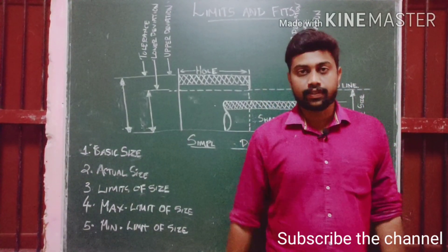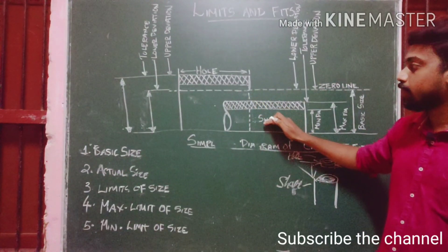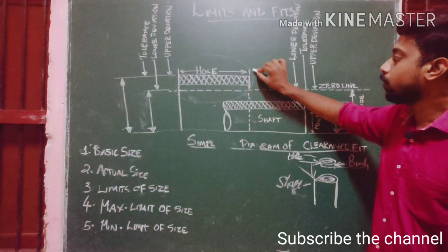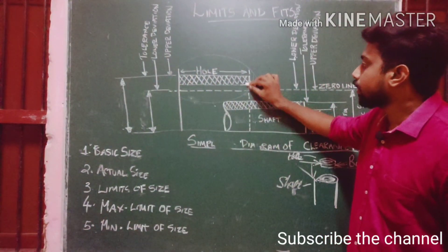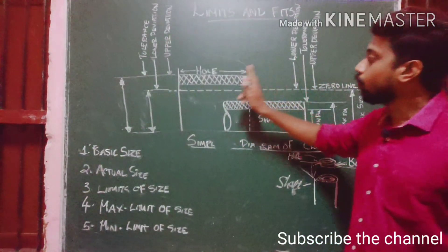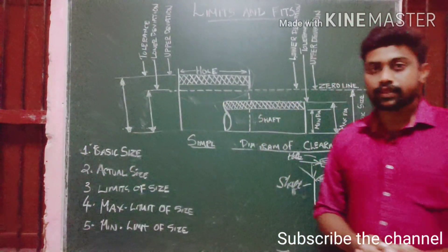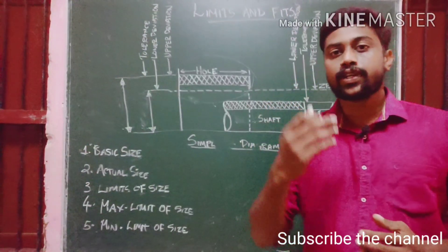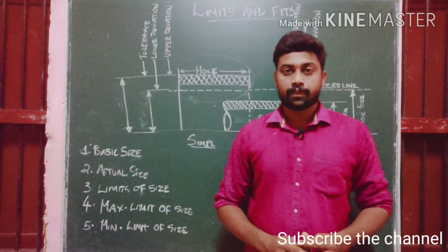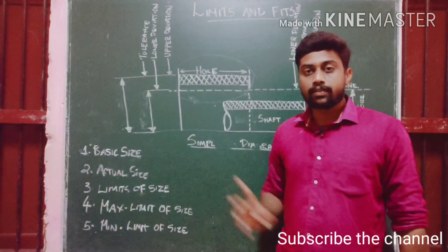Basic size — the first thing. Looking at this figure, I will say there is a shaft and a hole. This is a hole in a cylinder, and this is a shaft. This shaft will fit in this hole. This is what we will discuss — the basic size, actual size, and tolerance.